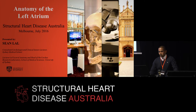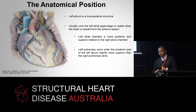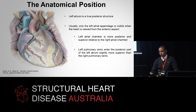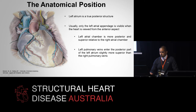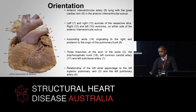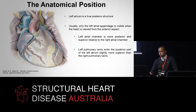We're going to have a quick run-through of the left atrial anatomy. The first thing to talk about is the anatomical position: the left atrium is a true posterior structure, and the anterior part of the heart is made up of the right ventricle. Usually only the left atrial appendage is visible when the heart is viewed from the anterior aspect. Because of the oblique nature of the transeptal plane, the left atrial chamber is actually more posterior and superior to the right chamber, and as such the left pulmonary veins will enter the posterior part of the left atrium slightly more superior than the right.